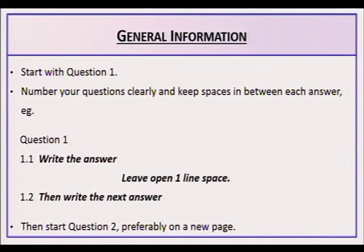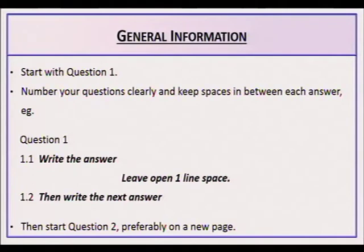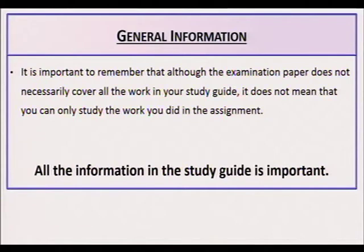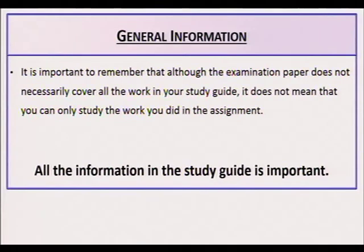Start with question 1, number your questions clearly, and keep spaces in between each answer. For example: Question 1, 1.1 — write the answer, leave one line space, then 1.2 — write the next answer. Remember that although the examination paper does not necessarily cover all the work in your study guide, it does not mean you can only study the work covered in the assignment. All the information in the study guide is important.